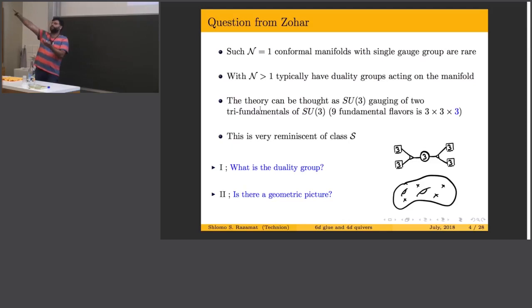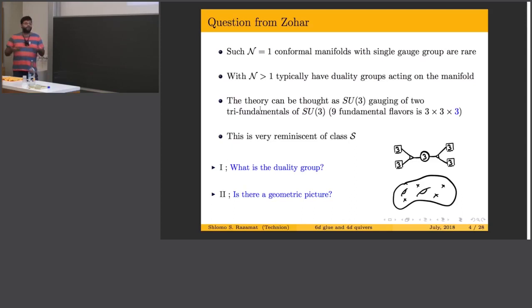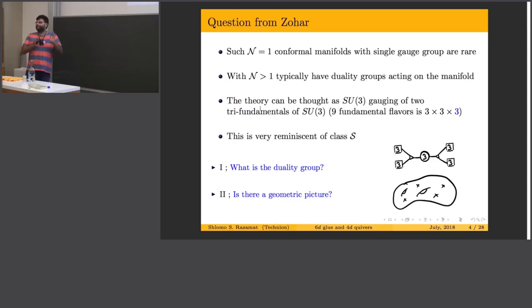With quiver theories we can engineer such things, but with single gauge nodes it's very hard. If you increase supersymmetry, of course, we know of many examples. N_f = 2N_c with N=2 supersymmetry is such an example, or N=4 is such an example. It's somewhere on its conformal manifold it's N=4. I only know of this example with N=1 — I wrote 'rare' here. Maybe there are other examples, but I don't know.